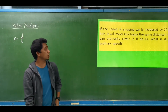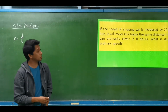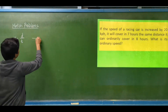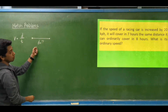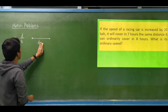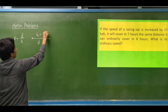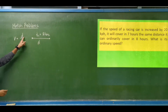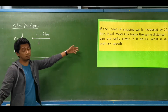For example, if the speed of a racing car is increased by 20 kilometers per hour, it will cover in 7 hours the same distance it can ordinarily cover in 8 hours. We are looking for the ordinary speed. The distance it can ordinarily cover in 8 hours gives us ordinary speed equal to distance divided by 8.